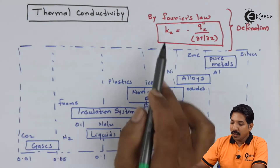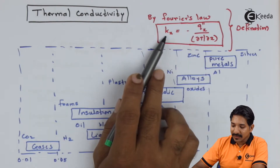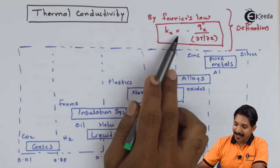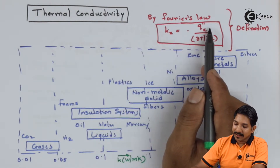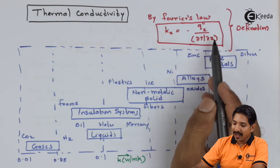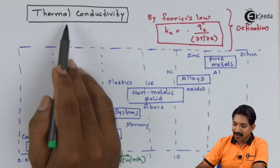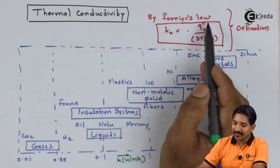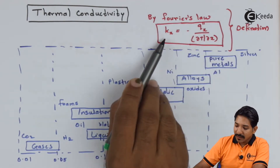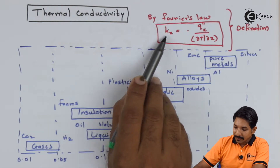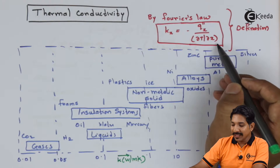In case of thermal conductivity, by Fourier's law, the thermal conductivity in the x-direction is defined as the negative of heat flux divided by the temperature gradient. So thermal conductivity is the rate of heat flux per unit temperature gradient.